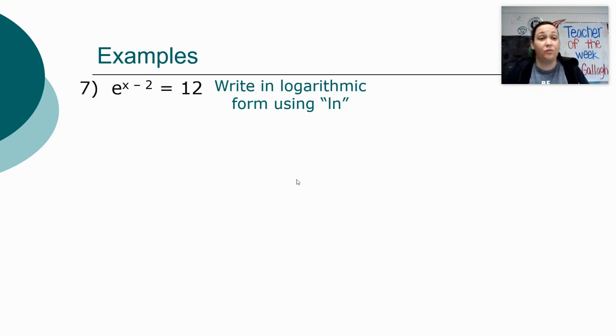When we're switching to logarithmic form, we do the wheel, but because this has an e in it, we are not going to use a log log, we're going to use an ln log.